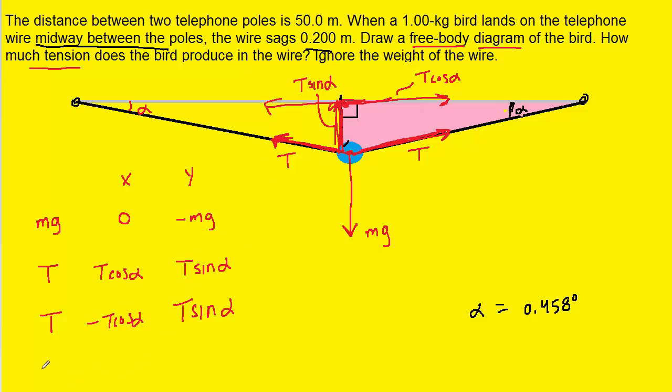Now that we have all of the forces broken into their XY components, we can find the sum of the forces. We'll begin by summing the three forces in the Y direction. So we would have negative mg plus T sine alpha plus another T sine of alpha.